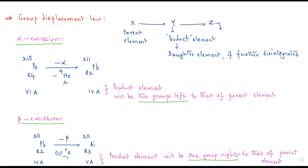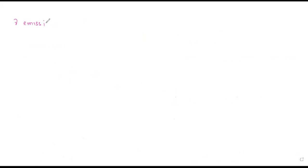In the case of alpha emission, the atomic number decreases by 2 units, so the product element will be 2 groups to the left of the parent element. In the case of gamma emission, since it does not change the atomic number or mass number, there is no change in the position of the product element.